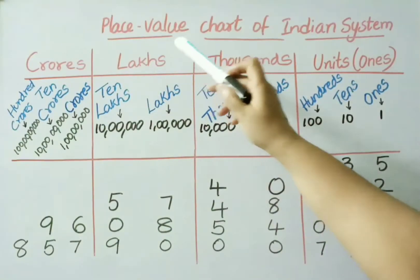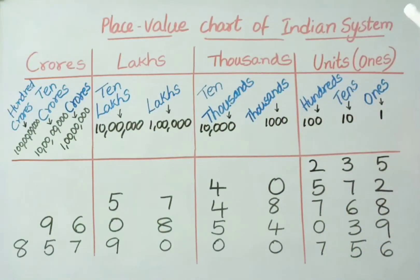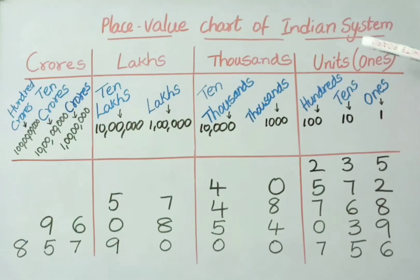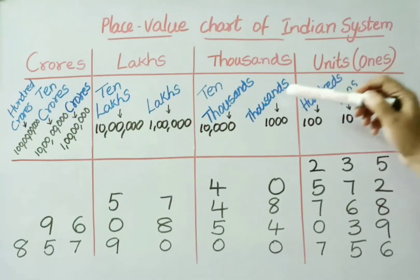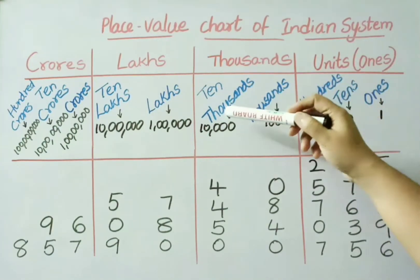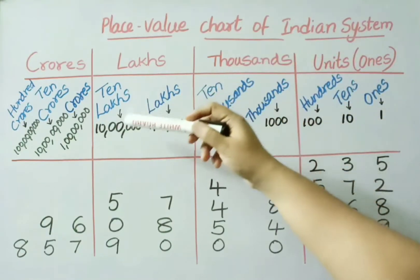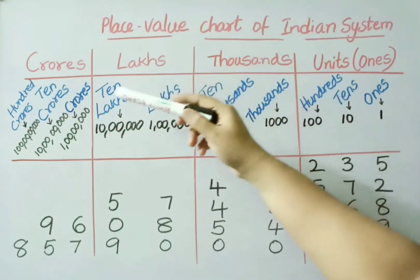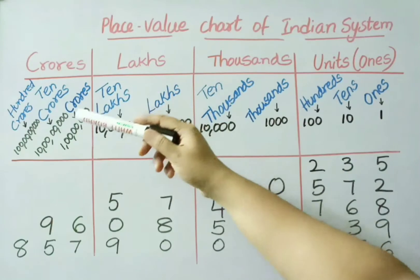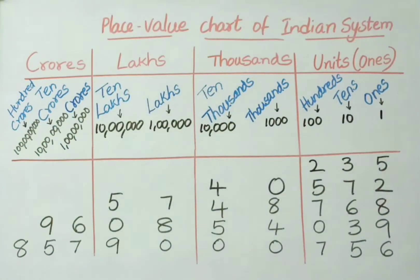See now, place the chart of the Indian system. Ones, tens, hundreds come under the Units or Ones period. Thousands and ten thousands come under the Thousands period. Lakhs and ten lakhs come under the Lakhs period. Crores, ten crores, and hundreds crores come under the Crores period. Let us read the numbers given in this tabular form.